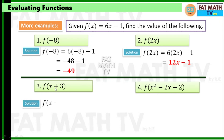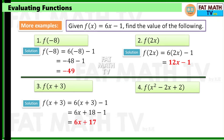For f of x plus 3, replace x with x plus 3. That gives 6 times x plus 3 minus 1. 6 times x plus 3 is 6x plus 18, and 18 minus 1 is 17. So f of x plus 3 is 6x plus 17.